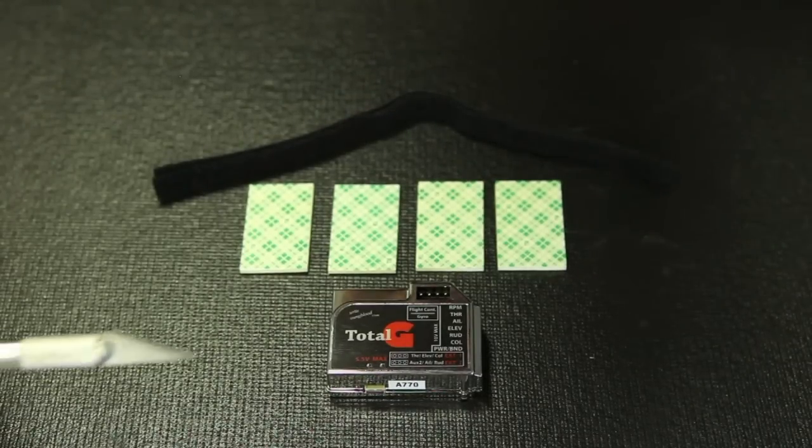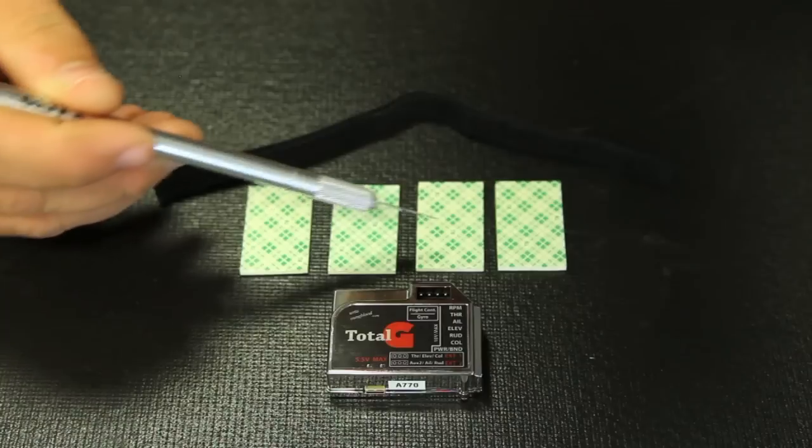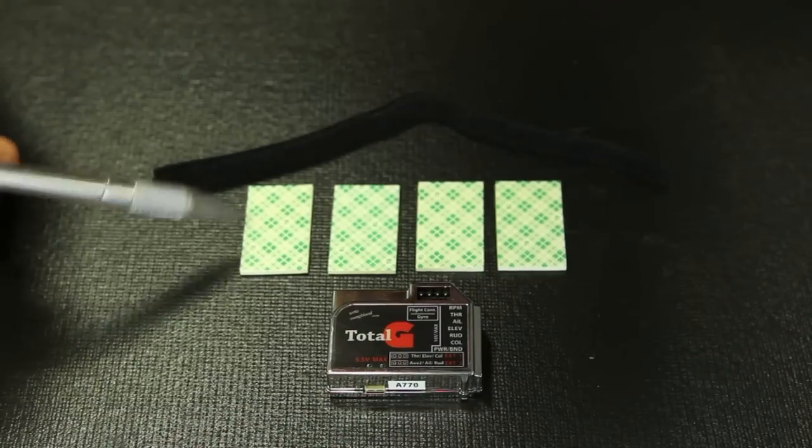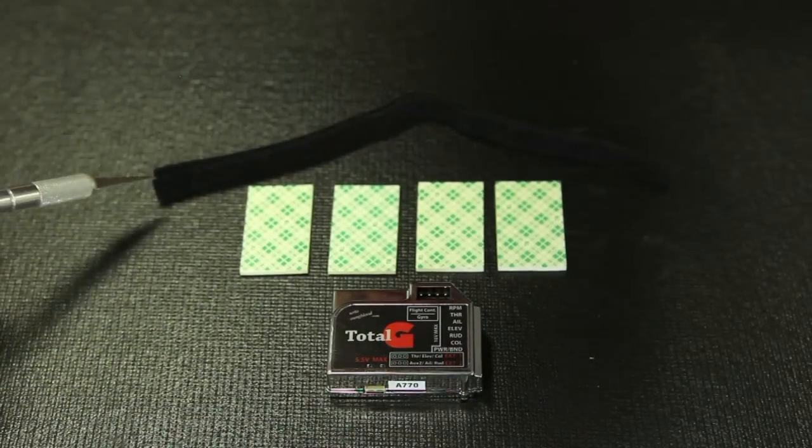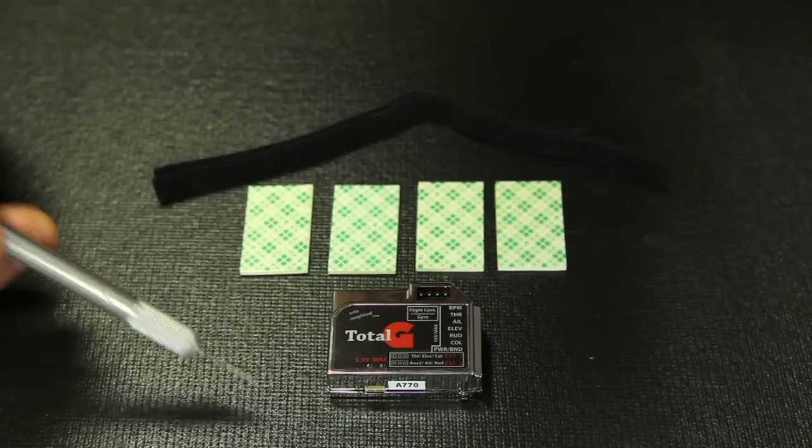Okay, moving along of the contents of the Total-G box, as you can see here, it also comes with four pieces of double-stick tape. This is very similar to the Solid-G tape, just a slightly different size. Also included is two straps, two Velcro straps, for securing the Total-G flight control into your helicopter.